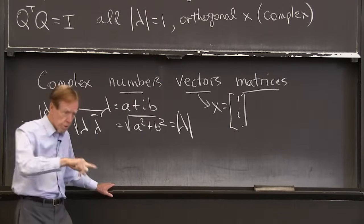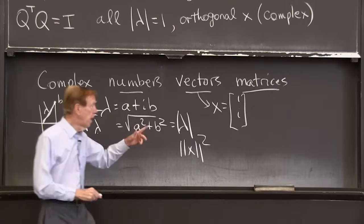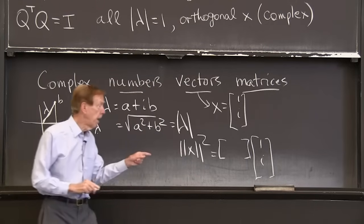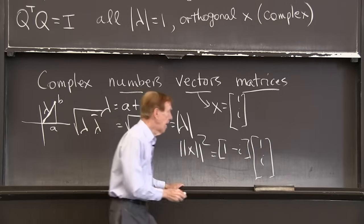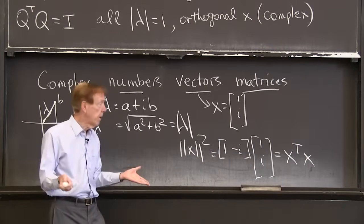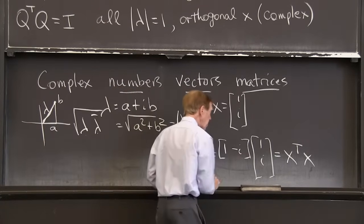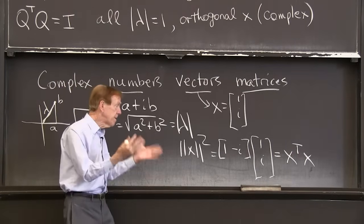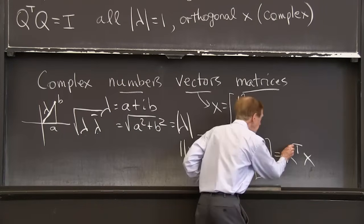So the length of x squared, the length of the vector squared, will be the vector. As always, I can find it from a dot product, but I have to take the conjugate of that. If I want the length of x, I have to take, I would usually take x transpose x, right? If I have a real vector x, then I find its dot product with itself, and Pythagoras tells me I have the length squared. But if the things are complex, I want minus i times i, I want to get lambda times lambda bar. I want to get a positive number. Minus i times i is plus 1. So I must do that.